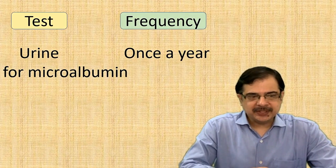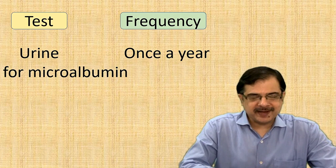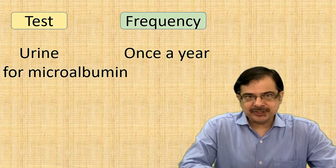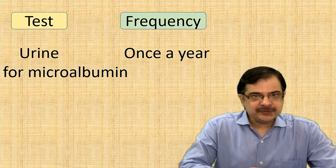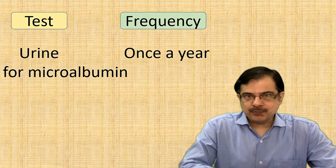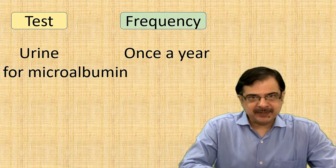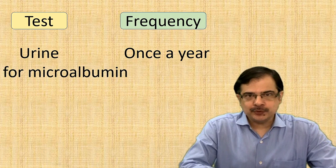Third test is urine for microalbumin, a very important test to detect early changes on the kidney due to diabetes. It should be done once a year if it is normal, but if it is abnormal then it should be repeated more frequently, like every two or three months.